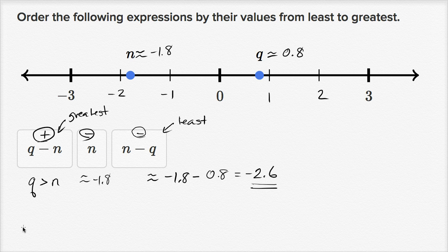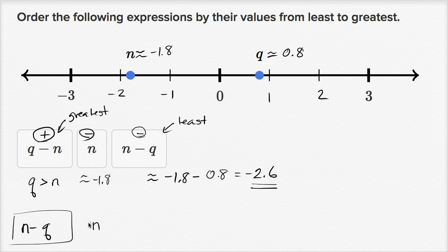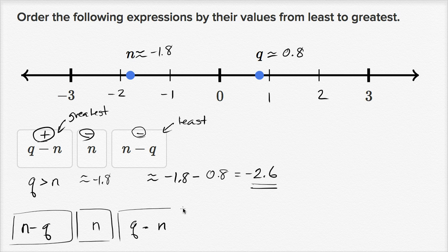Ordering them from least to greatest: n minus q is the most negative at roughly negative 2.6, then n which is still negative at roughly negative 1.8, and then q minus n which is roughly positive 2.6 — that is the greatest.